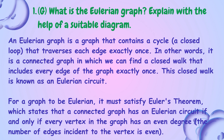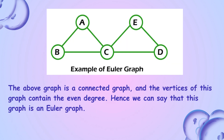An Eulerian graph is a graph that contains a cycle — a closed loop — that traverses each edge exactly once. It is a connected graph in which we can find a closed walk that includes every edge exactly once; this closed walk is known as an Eulerian circuit. For a graph to be Eulerian, it must satisfy Euler's theorem: a connected graph has an Eulerian circuit if and only if every vertex has an even degree. The given graph is connected and all its vertices have even degree; hence it is an Euler graph.